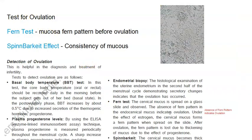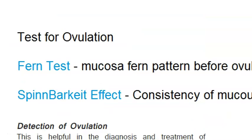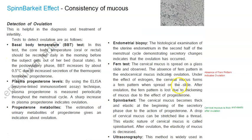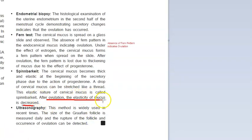Under cervical mucus study there is the fern test and the spinnbarkeit effect. In the fern test, the cervical mucus is placed on a glass slide and observed under the microscope for a fern-like pattern before ovulation. In the spinnbarkeit effect, the mucus is thick and elastic at the beginning of the secretory phase and can be stretched like a thread. After ovulation, the elasticity of the mucus decreases.